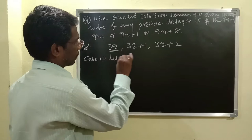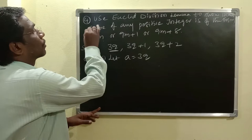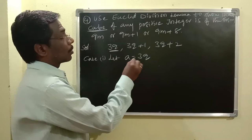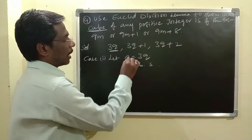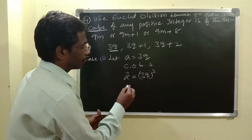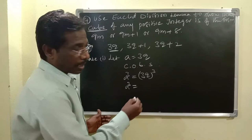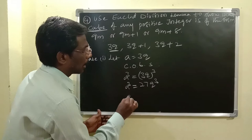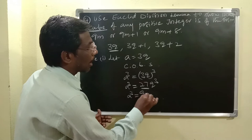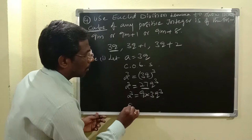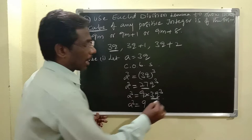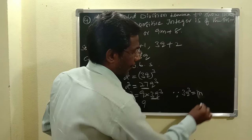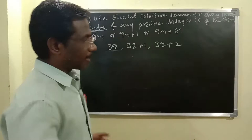Case 1: Let A equals 3Q. In the question they are asking for the cube of any positive integer, so I am going to do cubing on both sides. A cubed equals 3Q whole cube, which equals 27Q cubed. Now 27 can be written as 9 times 3, so A cubed equals 9 times 3Q cubed. Assuming 3Q cubed equals M, we get A cubed equals 9M.